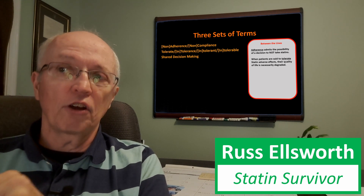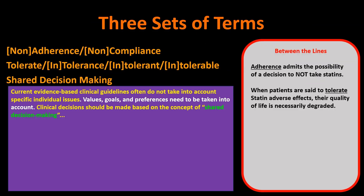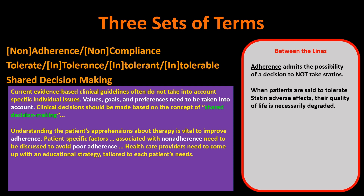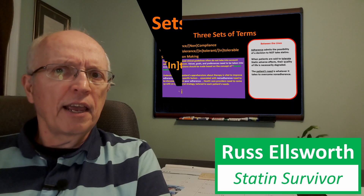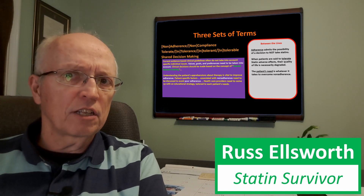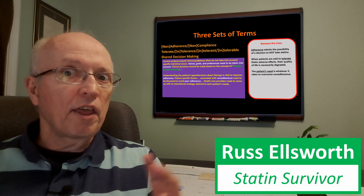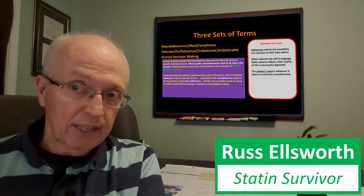Finally, there's the term shared decision-making. Current evidence-based clinical guidelines often do not take into account specific individual issues — values, goals, and preferences need to be taken into account. Understanding the patient's apprehensions about therapy is vital to improve adherence. Healthcare providers need to come up with an educational strategy tailored to each patient's needs. Reading between the lines, when they say tailoring to the patient's needs, they mean whatever it takes to overcome the patient's non-adherence — if the patient has objections for a particular reason, their need is to have that objection overcome.